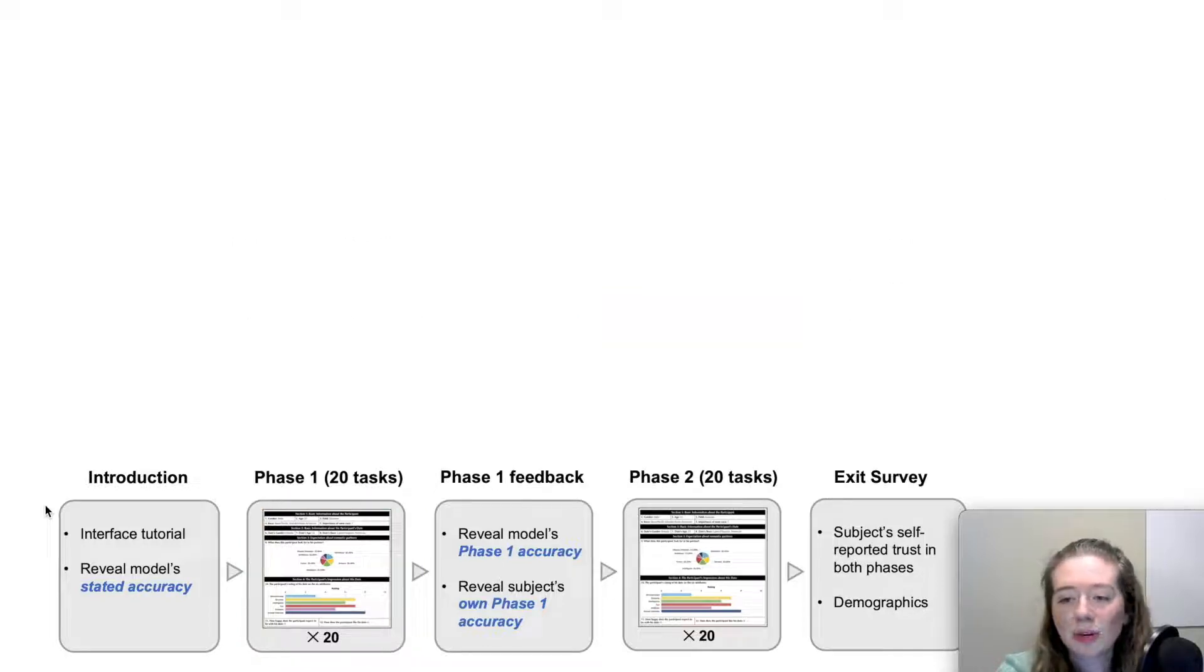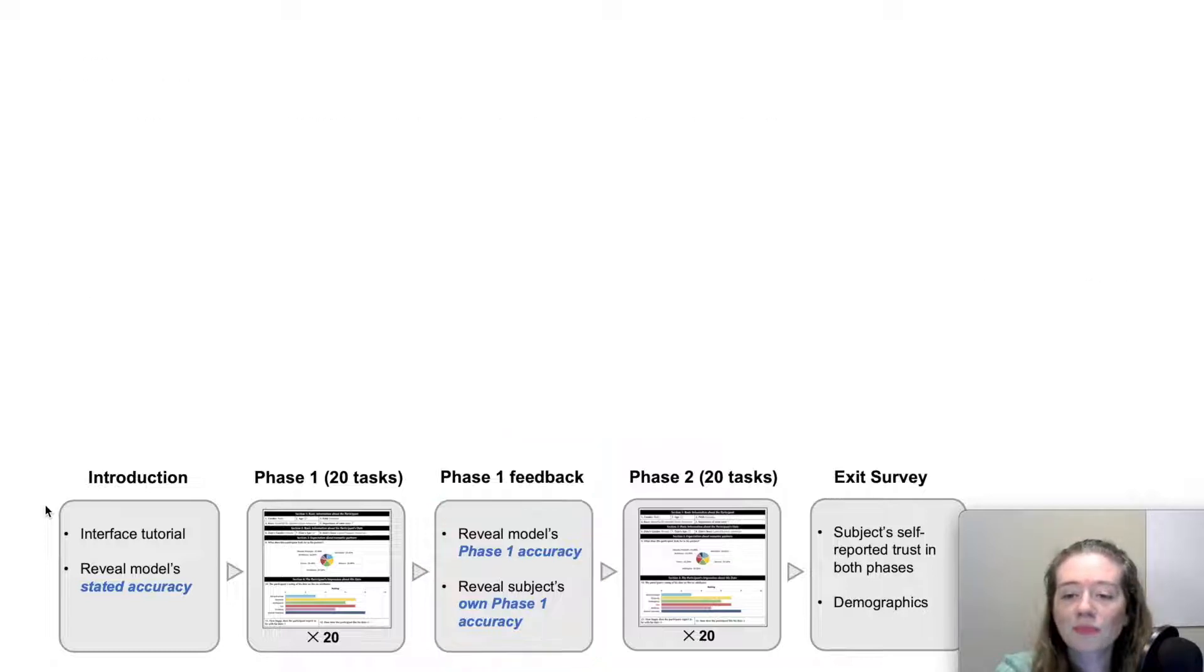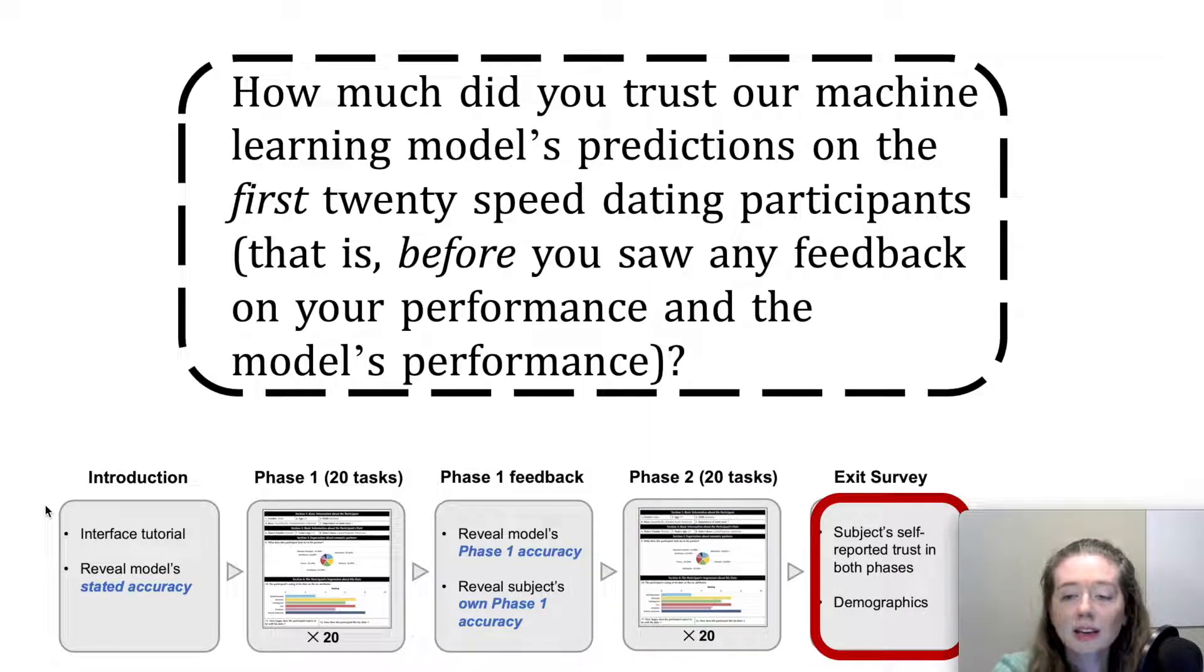Once these tasks were completed, subjects were told both the model's accuracy and their own accuracy in phase 1. Afterwards, subjects were asked to complete an additional 20 tasks in phase 2. Finally, subjects were asked to take an exit survey where they provided their self-reported trust in the model's predictions for both phase 1 and phase 2 individually.